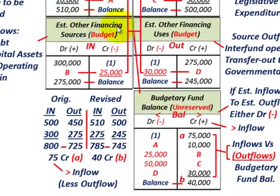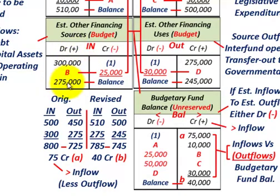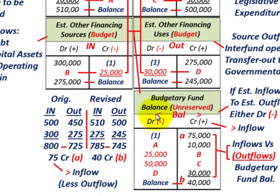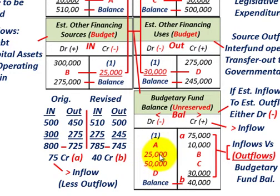Now let's go down to our estimated other financing sources. Let's say we have a reduction to our inflows of $25,000, so we credit our estimated financing sources by $25,000, leaving a balance of $275,000 in that account. The debit is going to go to the budgetary fund balance — reduce it by $25,000. So your fund balance is being reduced because you have a reduction in inflows from other financing sources by $25,000.